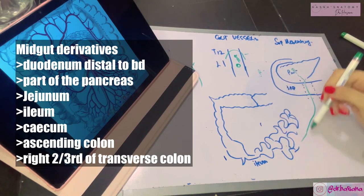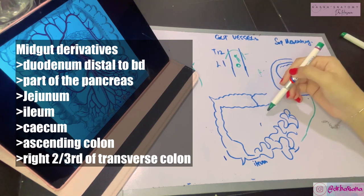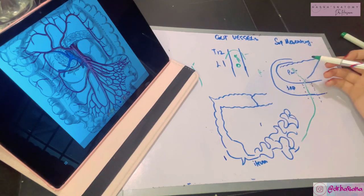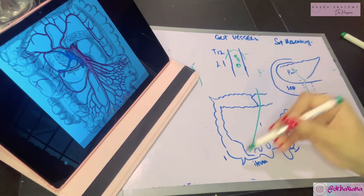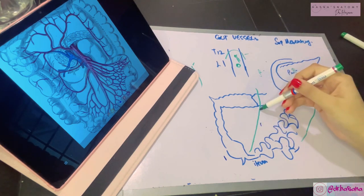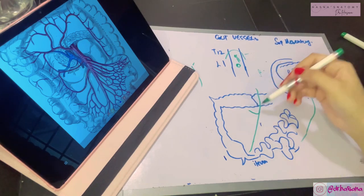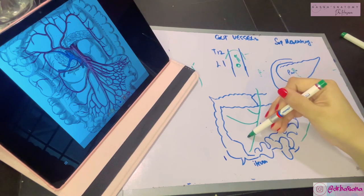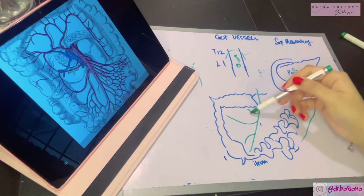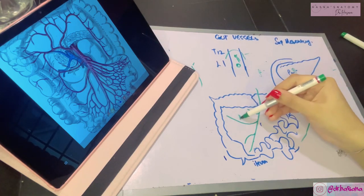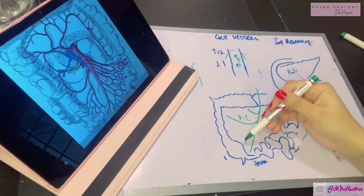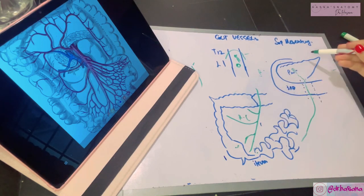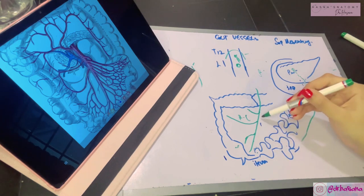The superior mesenteric artery needs to supply the entire coils of small intestine and the curve of the large intestine. From its right side it gives the middle colic artery for the transverse colon, the right colic artery for the ascending colon, and the ileocolic artery for the ileocecal region. From its left side, the small intestine is supplied by 12 to 15 jejunal and ileal branches.